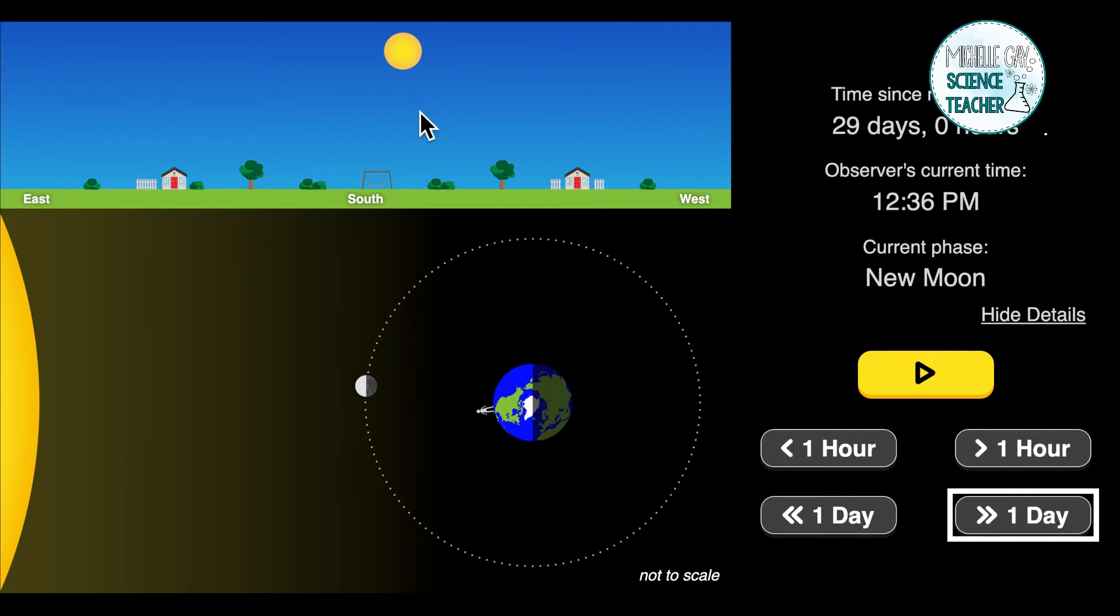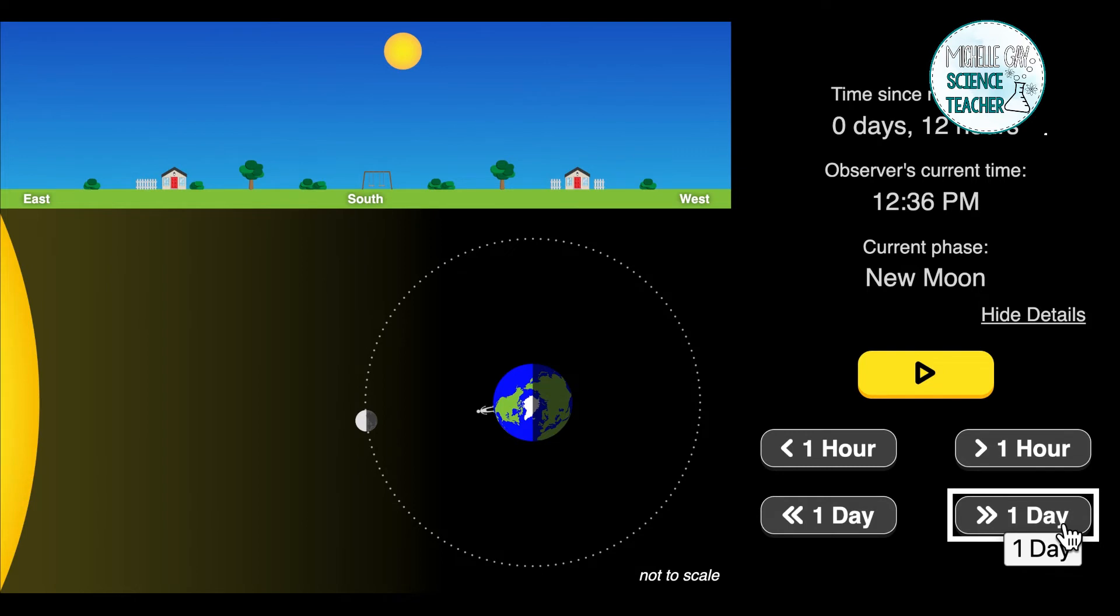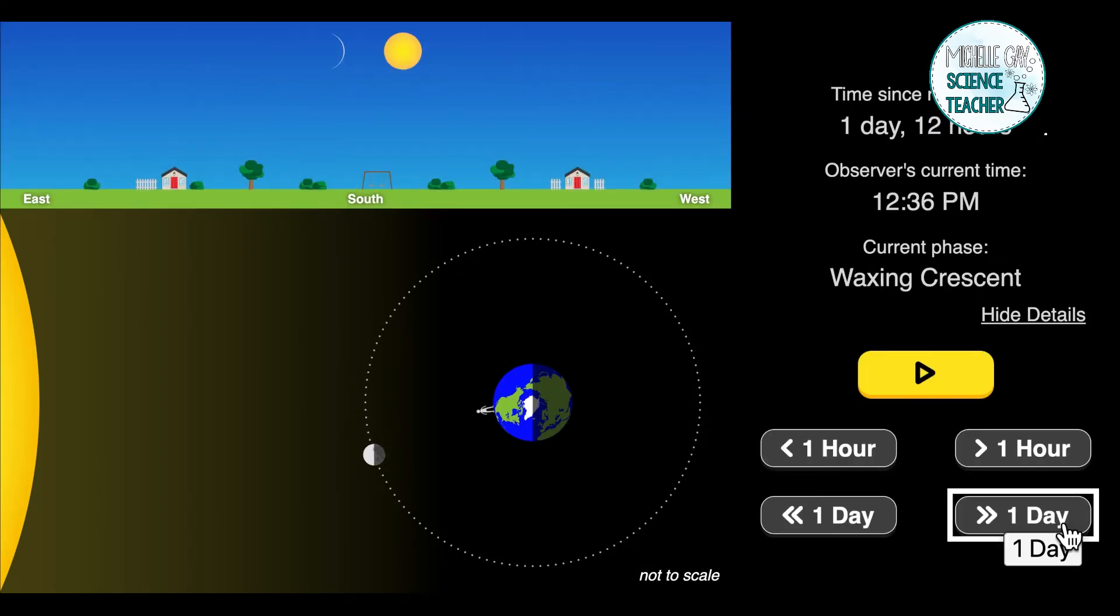When we get into the phase of the new moon, we cannot see the moon. But as the days continue, notice we have 29 days and zero hours. As the days continue, we're going to start over the process. From the new moon, we are going to move into what we call the waxing crescent. The waxing crescent phase is a thin crescent opening to the left.